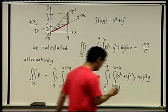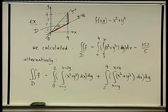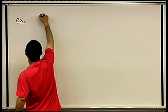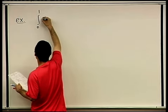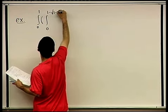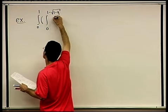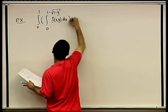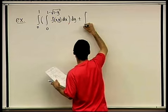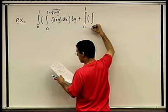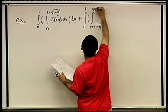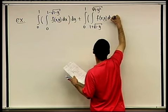I want to do another example, which is more intriguing but follows the same idea of changing order of integration. I'm going to look at the following integral: the integral from 0 to 1 dy of the integral from 0 to 1 minus √(1−y) dx of f(x,y), plus the integral from 0 to 1 dy of the integral from 1 plus √(1−y) to √(4−y²) dx of the same function f(x,y).